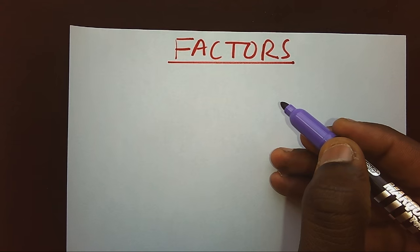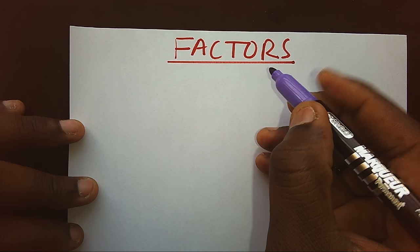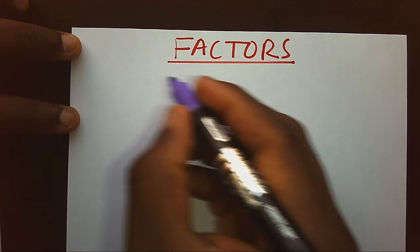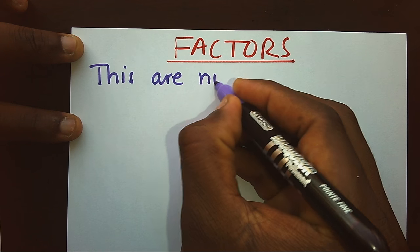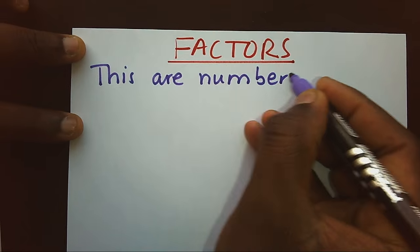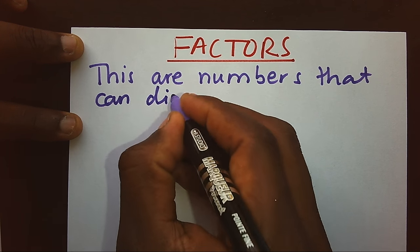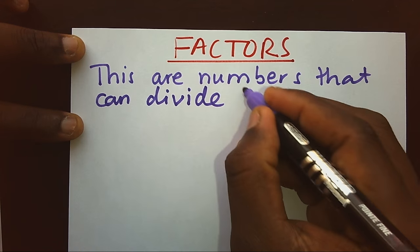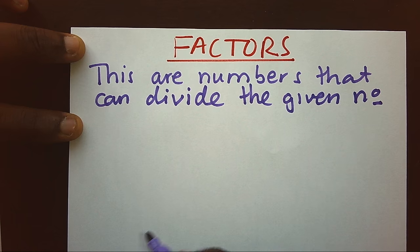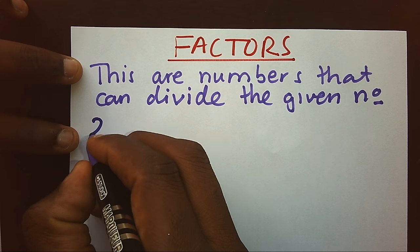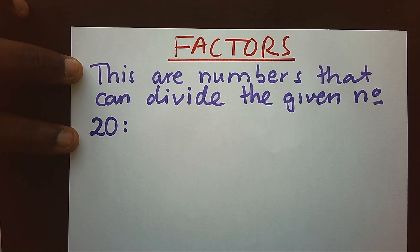We are looking at factors. As we know, factors are numbers that can divide the given number. For example, if we are given 20, which numbers can divide 20? Now these are the examples.